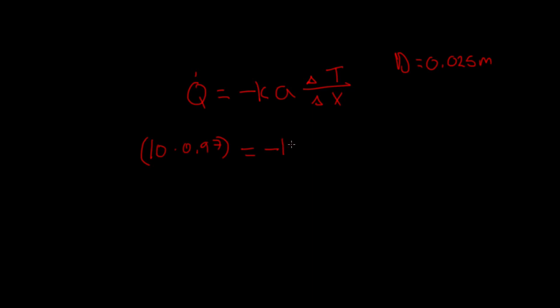It's equal to minus k. That's what we're solving for. So that's going to stay a variable. Area, we have the diameter, so this is going to be pi, times 0.025 squared on 4.